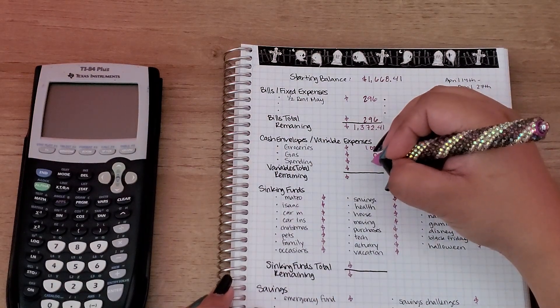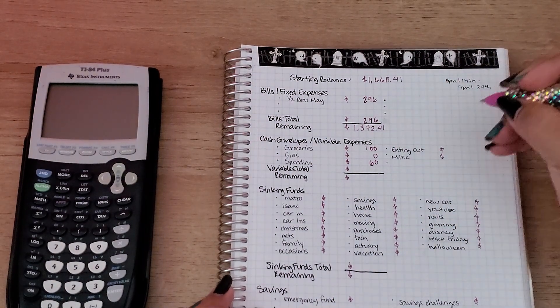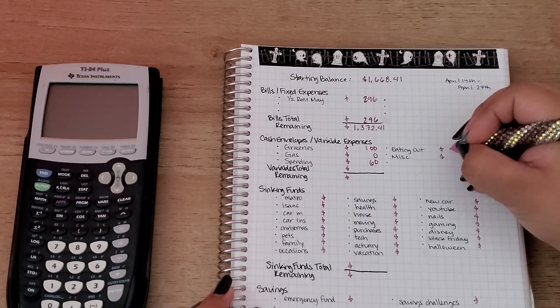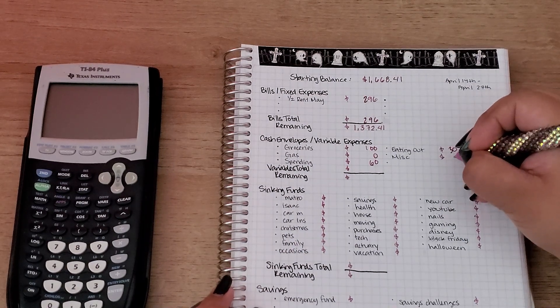Spending is going to be $60, eating out I budgeted $30, and then miscellaneous is going to be $5.